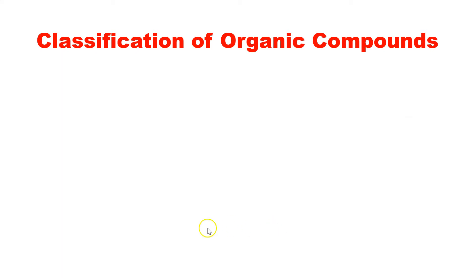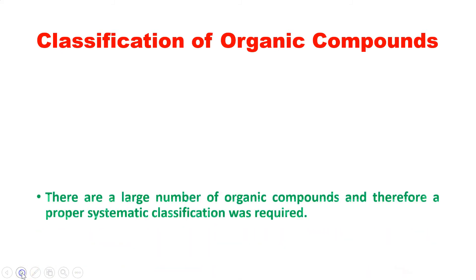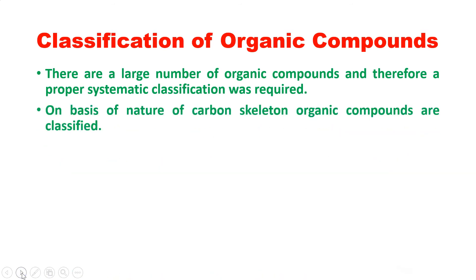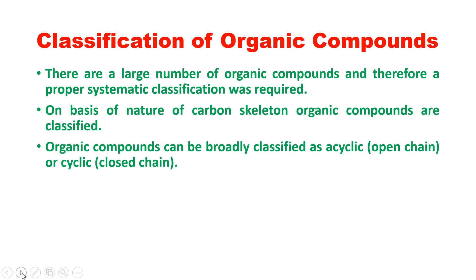Now we will see the classification of organic compounds on the basis of carbon skeleton. There are a large number of organic compounds and therefore a proper systematic classification is required. On the basis of the nature of carbon skeleton, organic compounds are classified into two main classes: open chain compounds and closed chain compounds. Open chain compounds are also called acyclic compounds, and closed chain compounds are cyclic — whether aromatic rings or cycloalkanes.